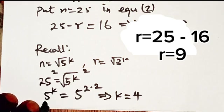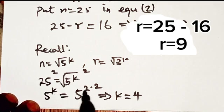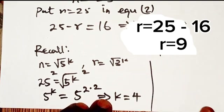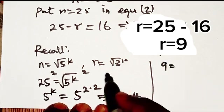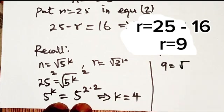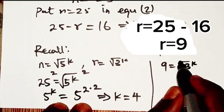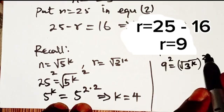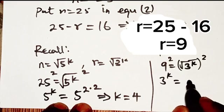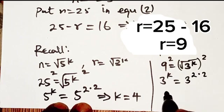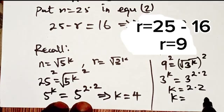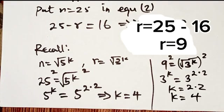Let's verify with r. We recall that r equals √(3^k). Setting √(3^k) equals 9 and squaring both sides, we get 3^k equals 81, which is 3^4. Since the bases are the same, we equate the powers and again get k equals 4. Both substitutions confirm k equals 4.